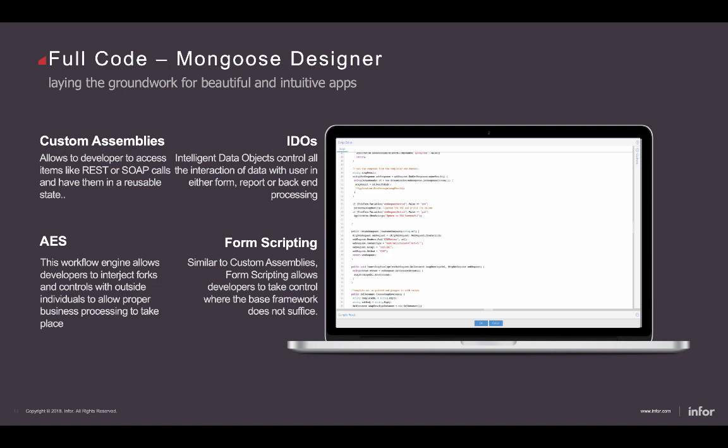Getting into the full Mongoose experience, we have full code. You don't have to develop with code, but if you want complex business logic, we allow fully compiled custom assemblies to be located inside our database. You can take a DLL inside Visual Studio, load it into our database, and reference it within the application. We also have our application event system — our workflow engine — which can be integrated with Ion workflow or used internally for simple notifications or business logic, all triggered from our mid-tier.